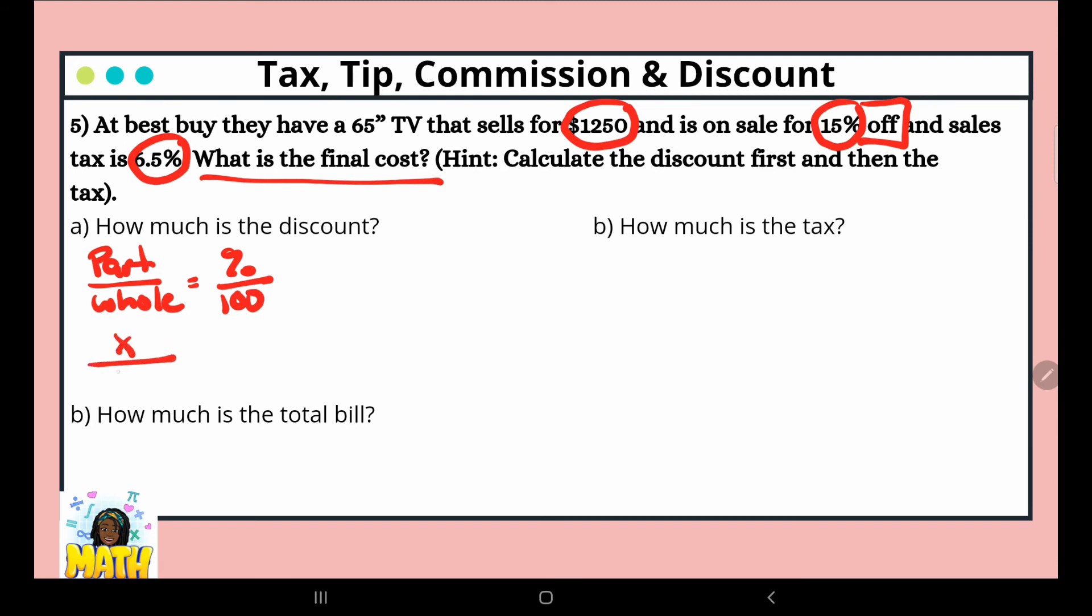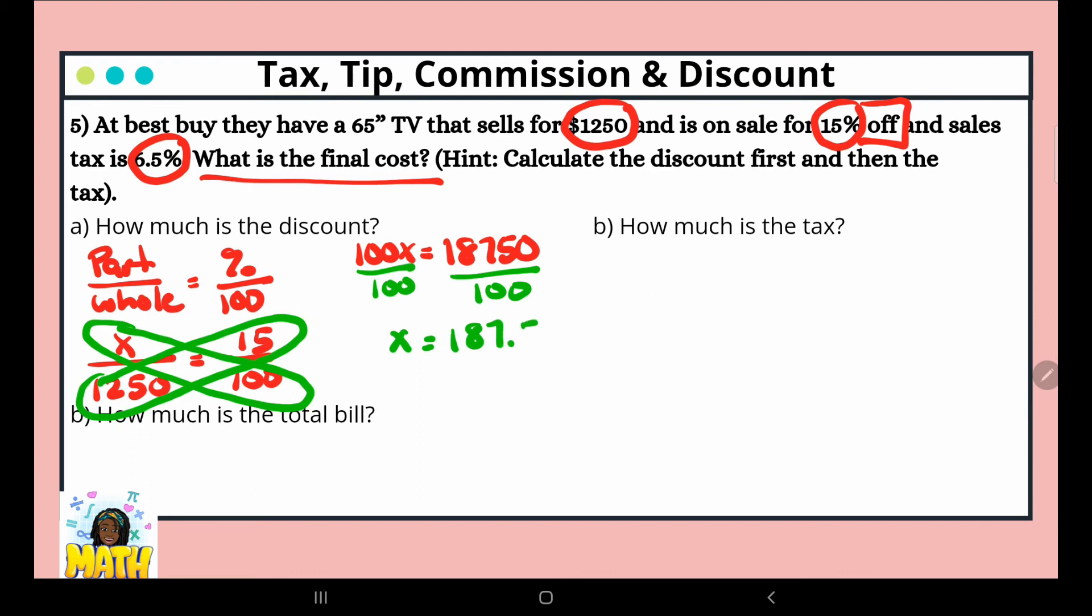The original cost is $1,250 and it's 15% off. That's our discount. And then our sales tax will be 6.5%. We're finding our part, our whole is $1,250, our percentage is 15 over 100. We're going to cross multiply. So 100x equals $1,250 times 15, which is $18,750. Now we're going to divide both sides by 100.